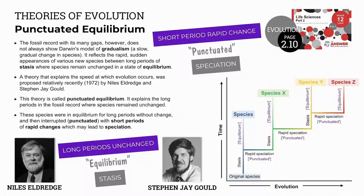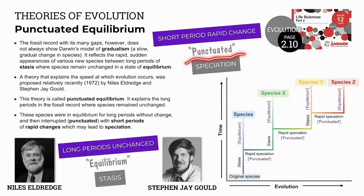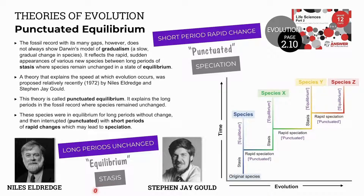In this theory, we have short periods of rapid change. This is where speciation occurs — rapid speciation — and this is known as the punctuated part of the punctuated equilibrium theory. Then we have long periods of no change, where the species remain largely unchanged. This is called stasis or equilibrium.